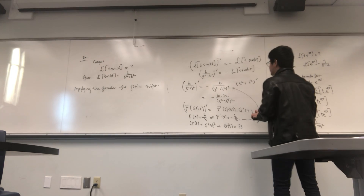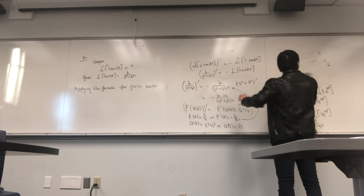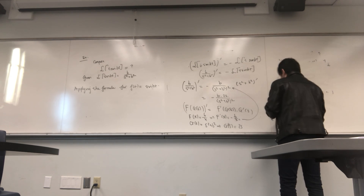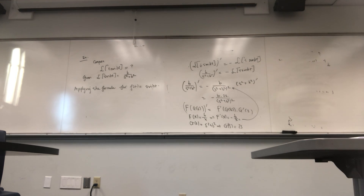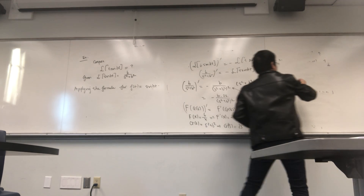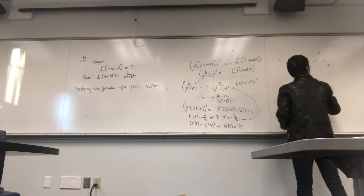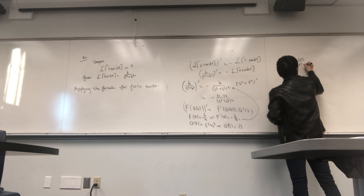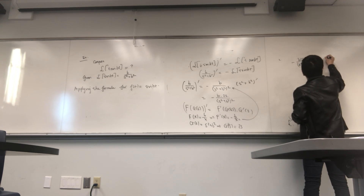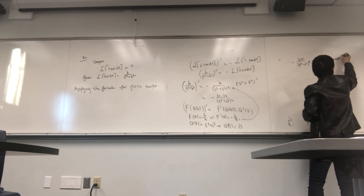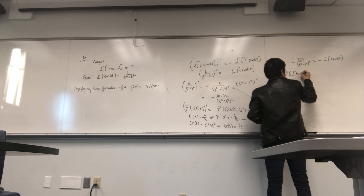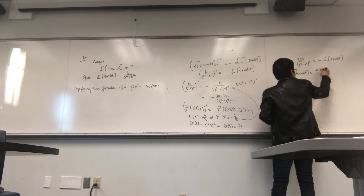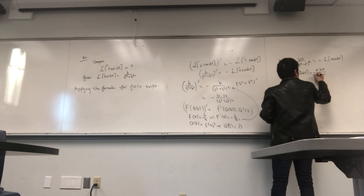So we have −2Bs/(s² + B²)² = minus L{t · sin(Bt)}. Multiplying both sides by −1, the Laplace transform of t · sin(Bt) = 2Bs/(s² + B²)².